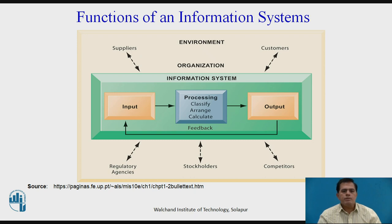In the Input, the organization collects data from the organizational database or from the external environment. The raw data goes to central processing where the data is classified, arranged, and appropriate calculations are done in the centralized information system. The final meaningful data is then transferred to the Output, where output feeds back to the input so the data is appropriately used.